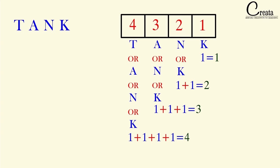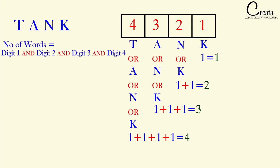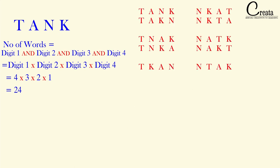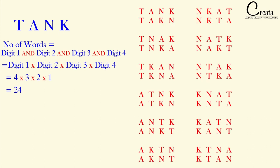The number of words formed using these four letters will comprise the first digit AND second digit AND third digit AND fourth digit. The first digit has 4 choices, the second has 3, the third has 2, and the fourth has 1. Replacing AND with multiplication, we get 4 × 3 × 2 × 1 = 24. That is the answer. With the four-letter word TANK, we can form 24 different words — it doesn't matter whether these words have meaning or not, as the question says without meaning. So 24 different words can be formed.